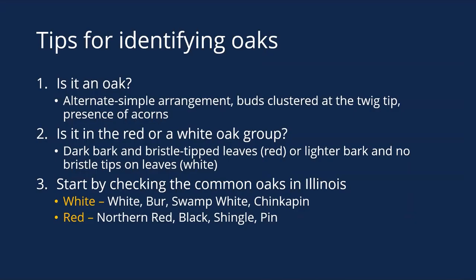Just a couple more slides for tips on identifying oaks. The first question is simple: is it an oak? Check to make sure it has an alternate simple arrangement, look to see if the buds are clustered at the twig tip, and look for acorns. If it is an oak, try to determine if it's in the red or white oak group — dark bark and bristle-tipped leaves puts it as a red; lighter bark and no bristle tips puts it as a white. Start by ruling out the common ones. For whites: white oak, bur oak, swamp white oak, and chinkapin are by far the most common. For reds: northern red, black, shingle, and pin oak. It's most likely going to be one of those eight oaks — rule them out first, then move on to the less common ones.